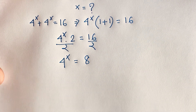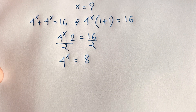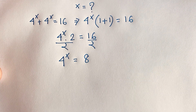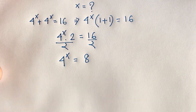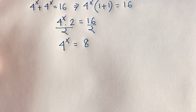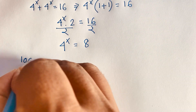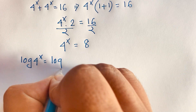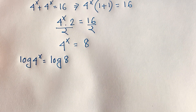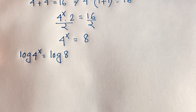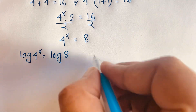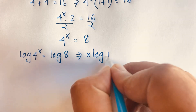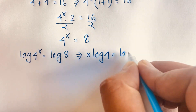At this moment you can solve this question using two methods: you can use the common log or the exponential approach. First, I'll use the common log. So: log of 4 to the power x is equal to log 8. The exponent moves to the front, giving x times log 4 is equal to log 8.